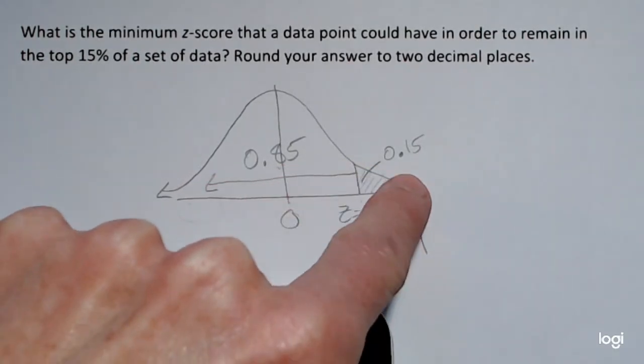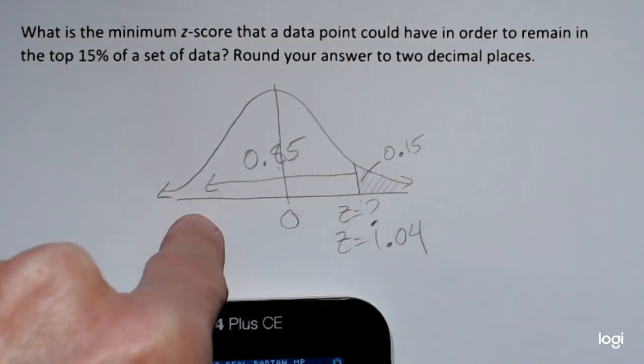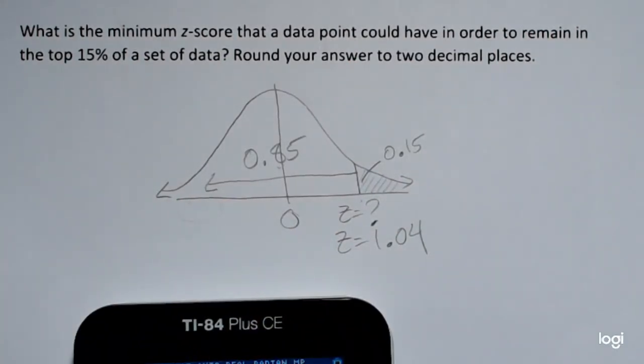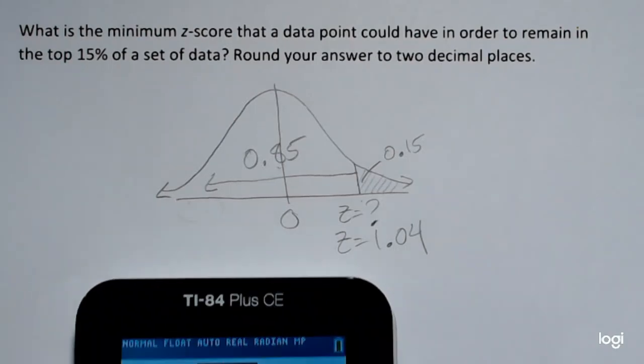Otherwise, if you put in 0.15, it's going to spit out the negative version, which is fine. You just remember you were expecting a positive z-score here.